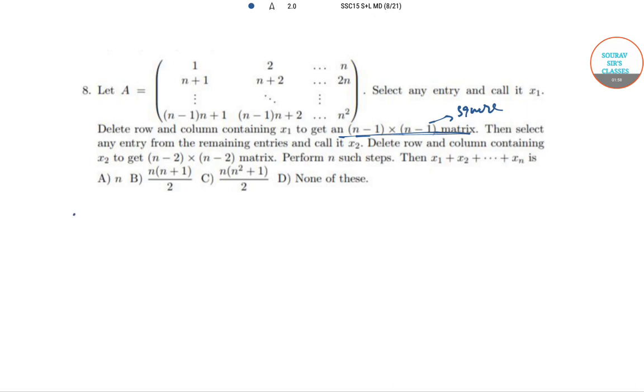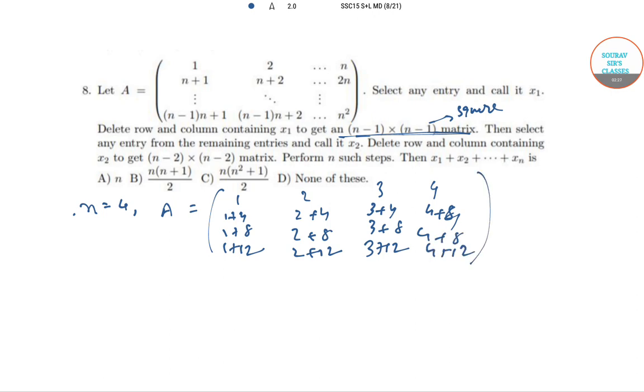For example, if you take a 4×4 matrix: first row is 1, 1+4, 1+8, 1+12; second row is 2, 2+4, 2+8, 2+12; third row is 3, 3+4, 3+8, 3+12; and fourth row is 4, 4+4, 4+8, 4+12.